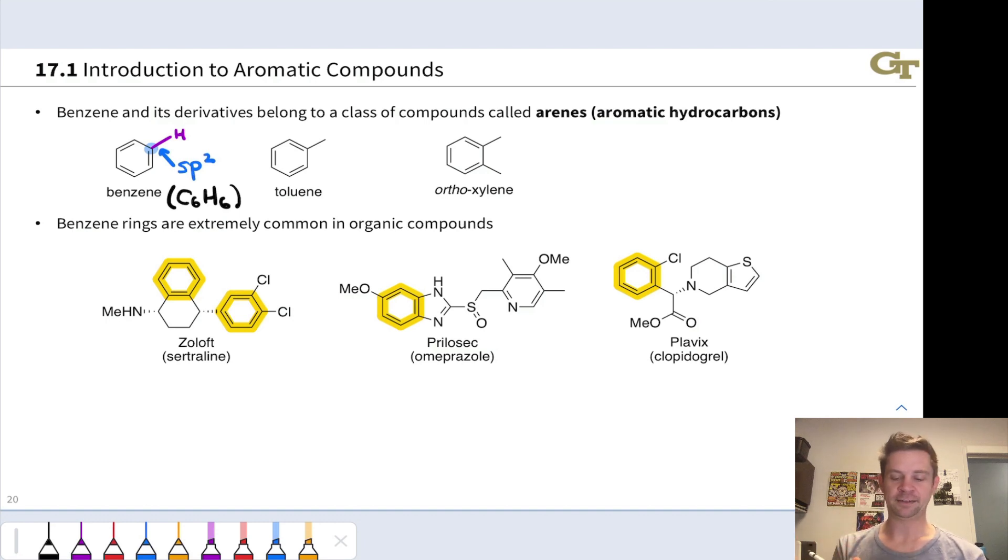Benzenes are known as arenes. The phenyl group, as we'll see shortly, is another word for a benzene group, and you may hear the term aryl group as well to refer to aromatic groups within molecules. So keep these terms in mind.